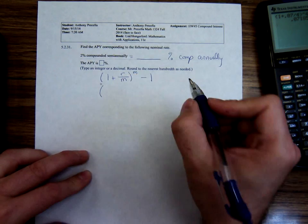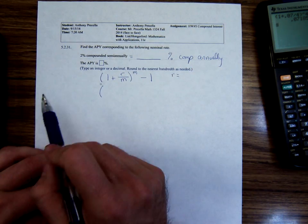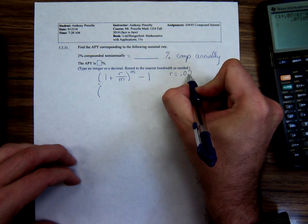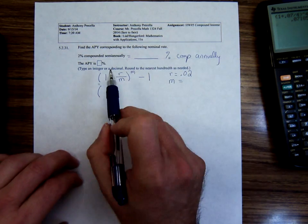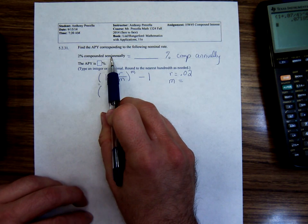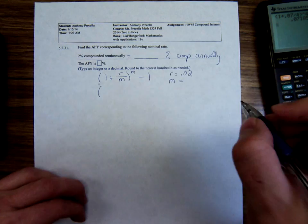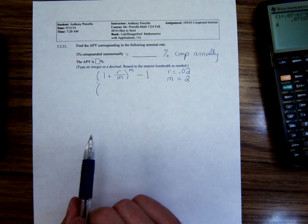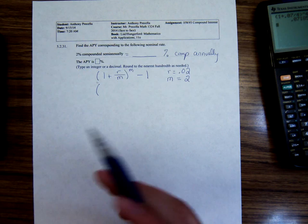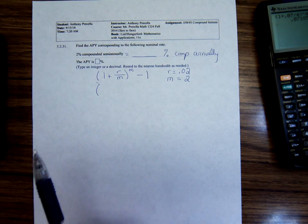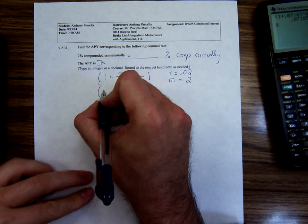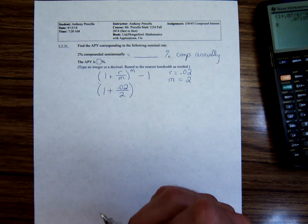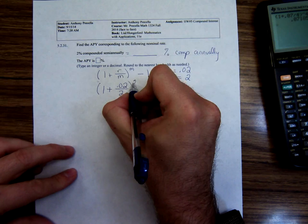I should write out my r and my m. What's my r? 2% semi-annually, so 0.02. We're going to have a couple of 2s here. Semi-annual. If M is the number of periods per year, how many semi-annual periods are there? Two. You'll notice that the amount of investment, P, doesn't matter. It's not in this formula. Neither is the number of years. Investing for 1 year, 5 years, that doesn't affect the APY. So 1 plus r over m raised to the m power minus 1.